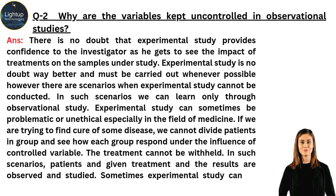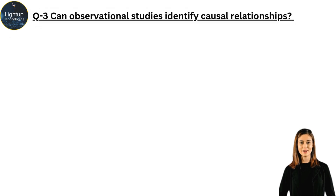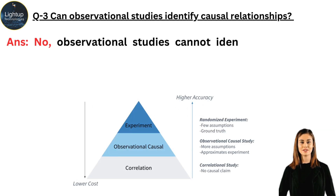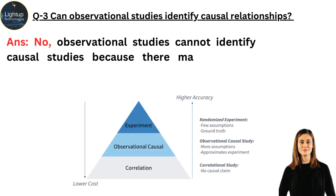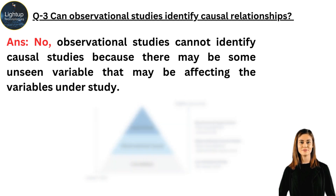Sometimes experimental study can go way beyond budget and become difficult to conduct. Can observational studies identify causal relationships? No, observational studies cannot identify causal relationships because there may be some unseen variable that may be affecting the variables under study.